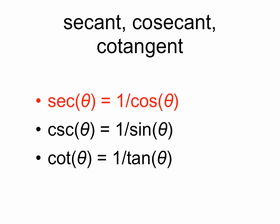Three more quick definitions: secant is defined as one over the cosine, cosecant is one over the sine, and cotangent is one over the tangent.